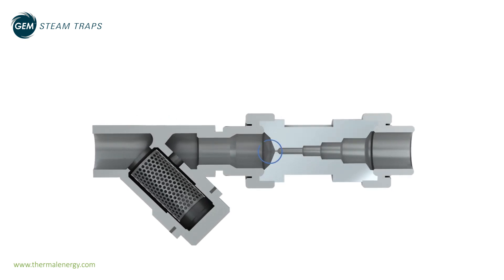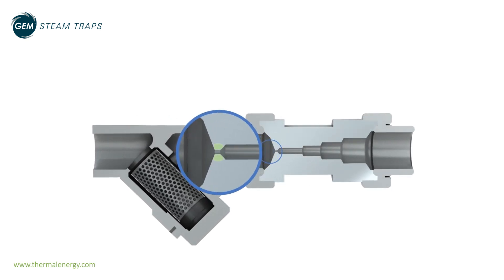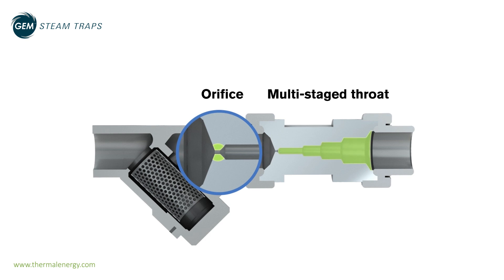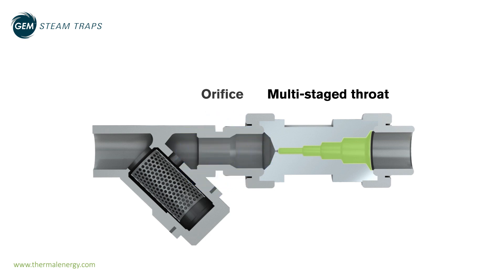Flow through the orifice is determined by its size and the difference in pressure across it. The gem trap regulates its capacity by creating a variable back pressure in the multistaged throat that matches the condensate drainage needs of the application.